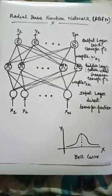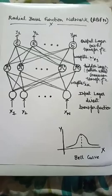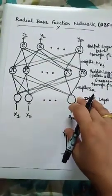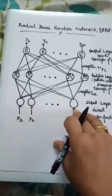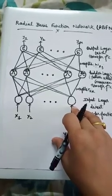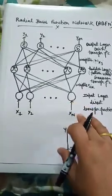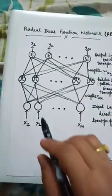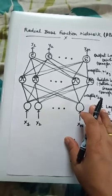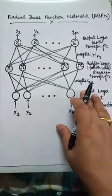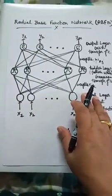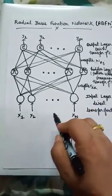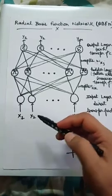So we can say that an RBFN performs classification by measuring the input similarities to examples from the training set. Each RBFN neuron stores a prototype, which is just one of the examples from the training set. When we want to classify a new input that arrives, each neuron computes the Euclidean distance between the input and the prototype.